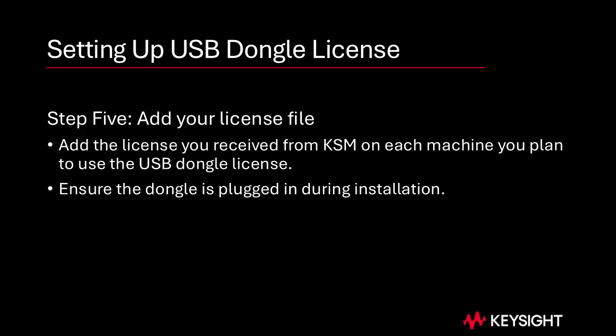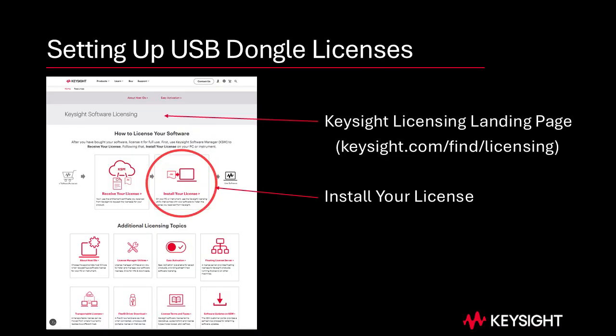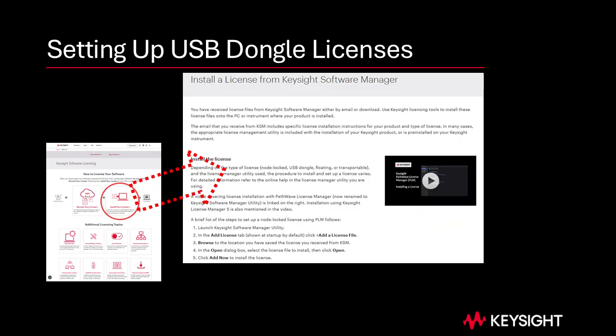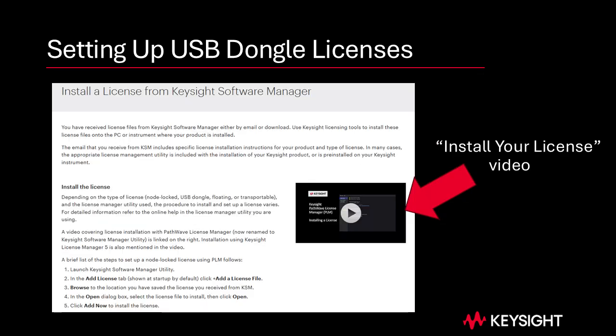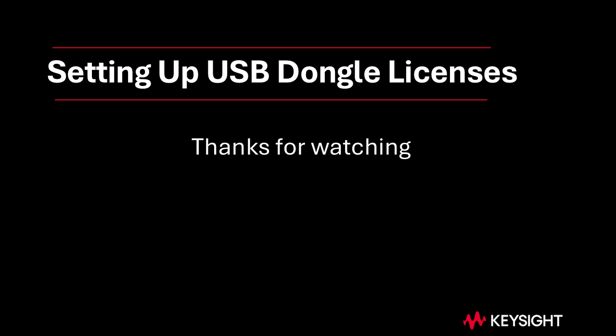Step 5: Add your license. Do the following on each machine you plan to use the USB portable license. Ensure the dongle is plugged into a USB port on the machine or instrument. See the video at Keysight.com/find/licensing for instructions on installing a license file. That's all for this video on USB dongle license setup. Thanks for watching.